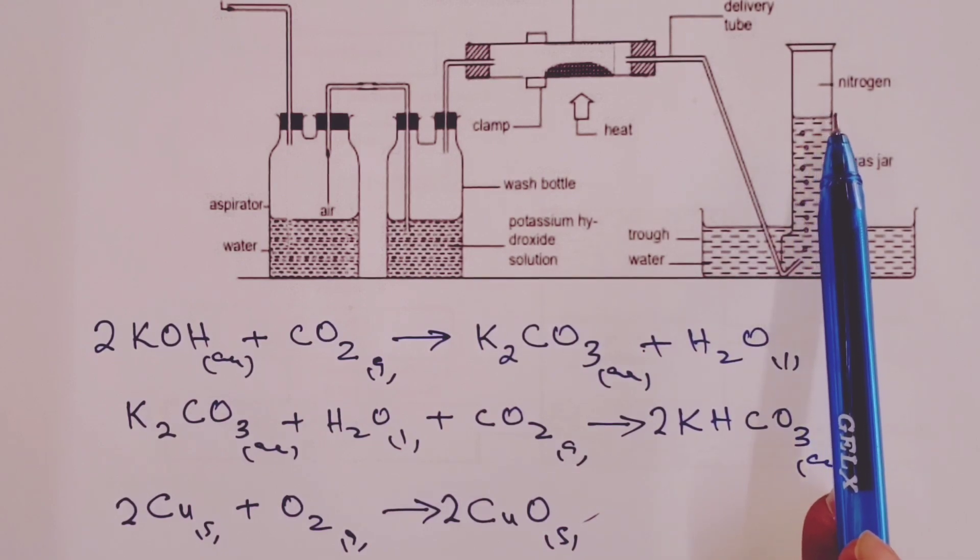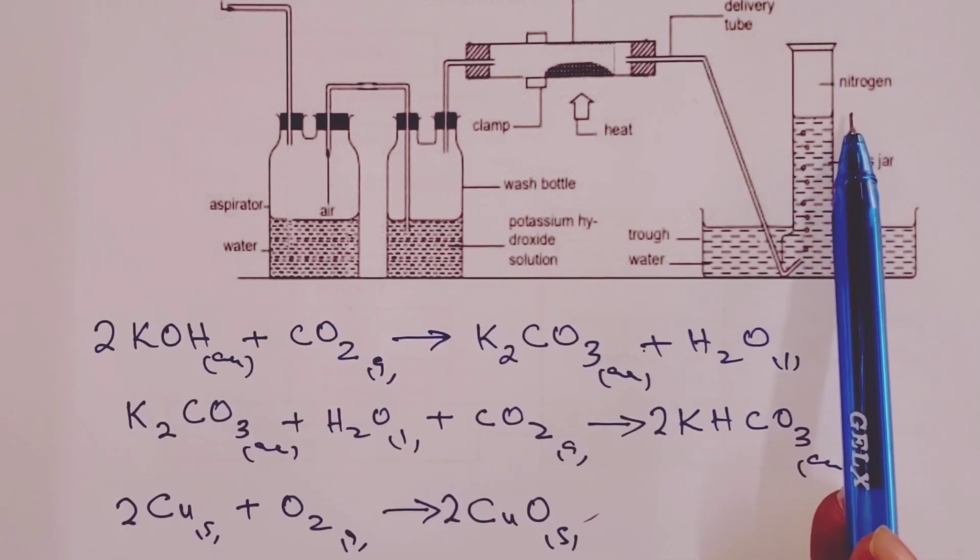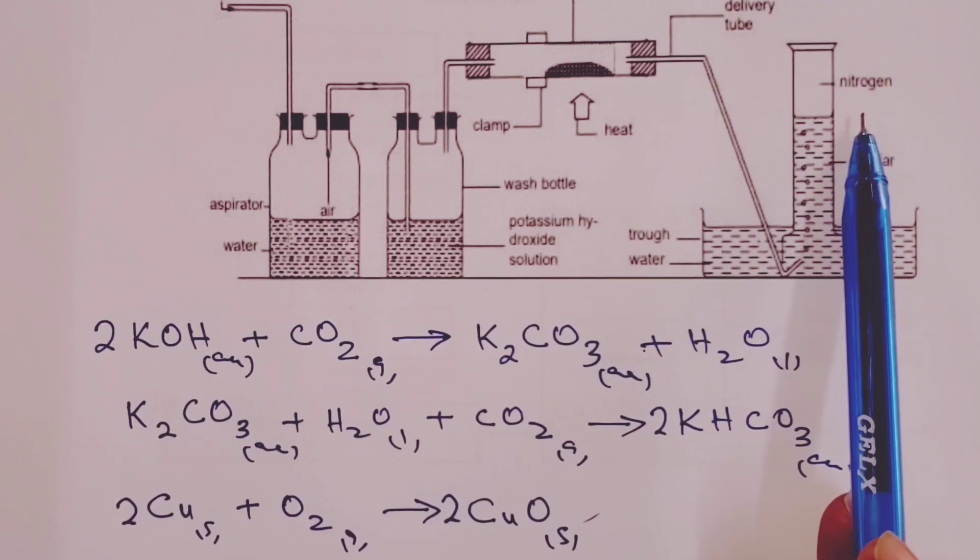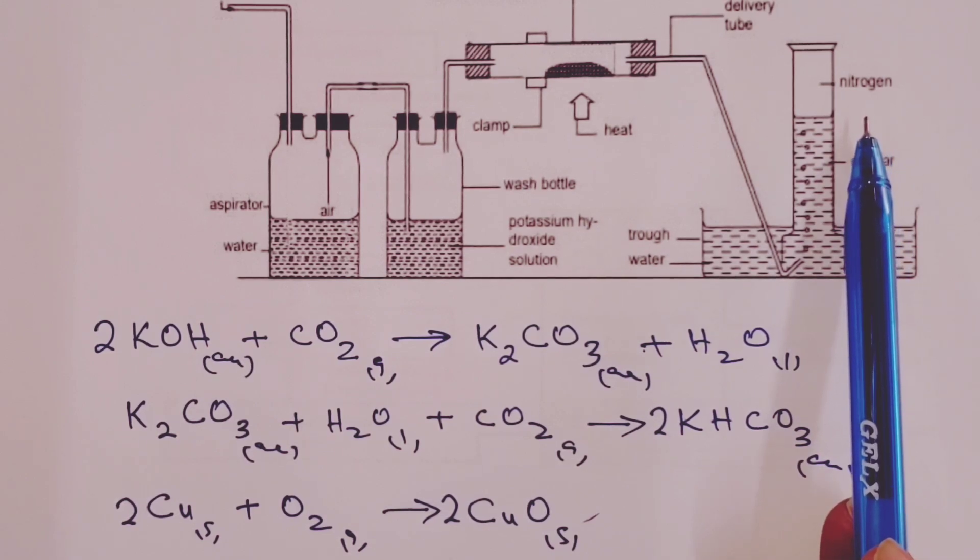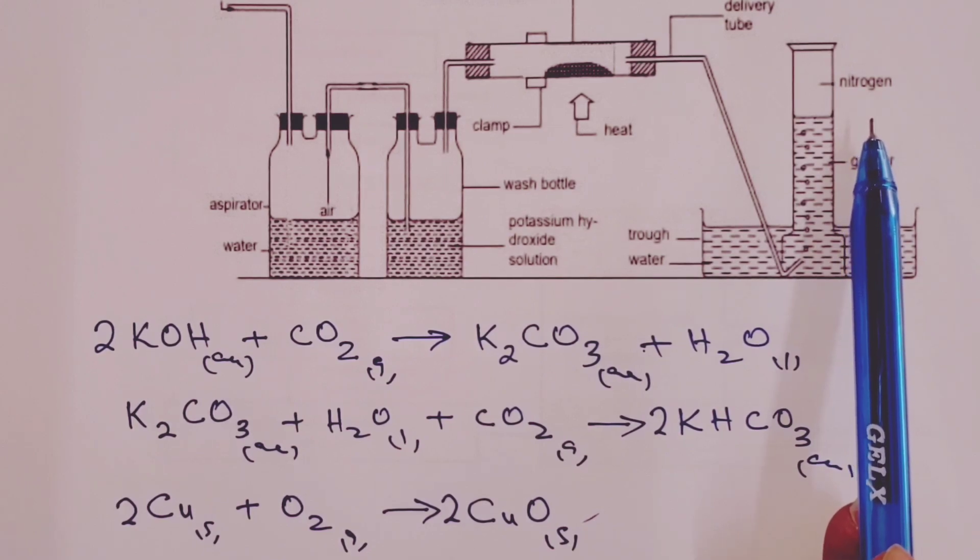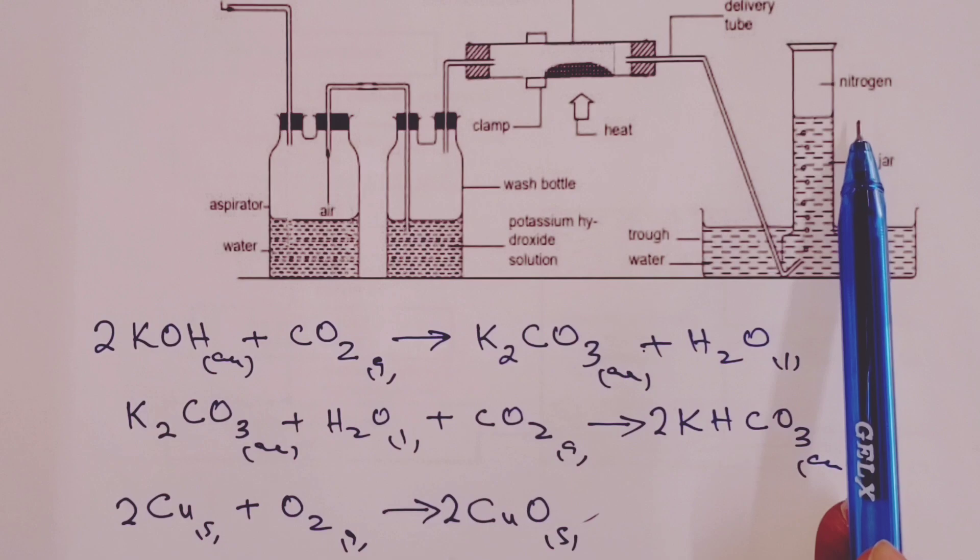Now, this nitrogen that is collected here is called atmospheric nitrogen. It still has the noble gases, mainly argon. It also has some water vapor, which we are yet to remove. So, one property of atmospheric nitrogen is that it is denser than pure nitrogen.